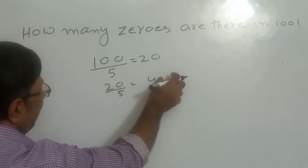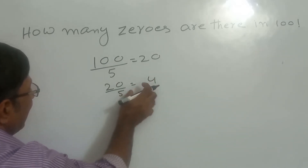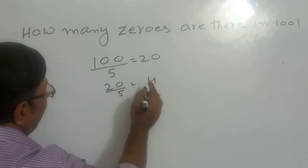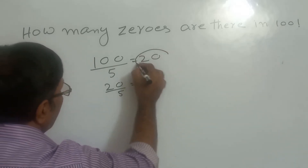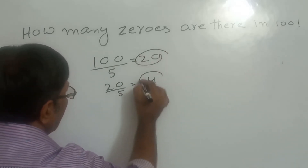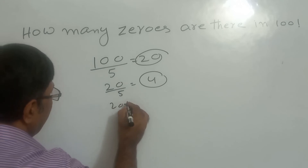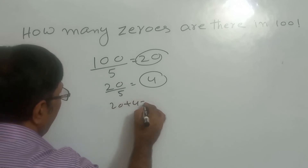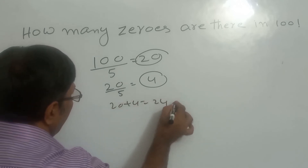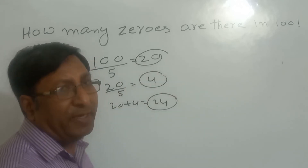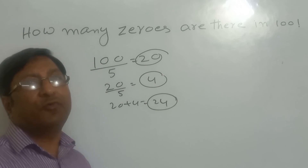Now the last quotient is less than 5, so we stop. Adding 20 and 4 gives 24. So the total number of trailing zeros in 100 factorial is 24. Thank you.